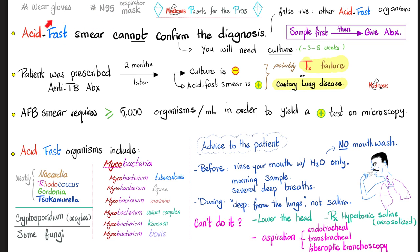Can the acid-fast bacillus smear test confirm the diagnosis of tuberculosis? It cannot. If you want to confirm, you need culture. The patient should not expect same-day culture results — it takes three to eight weeks to come back, because tuberculosis is very slow-growing on cultures.